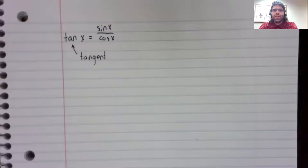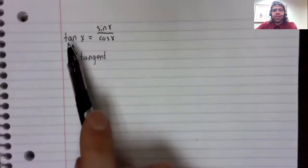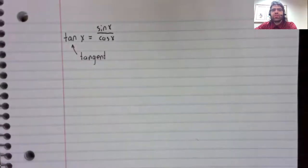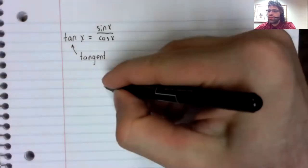The tangent of x, abbreviated tan, is the sine of x divided by the cosine of x.